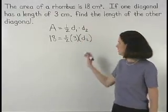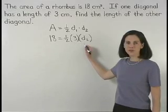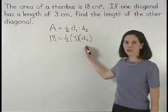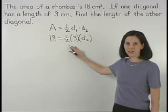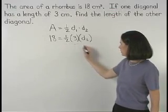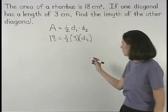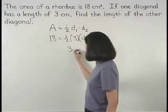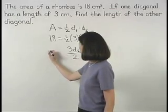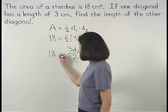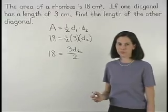Now to find d2, or the other diagonal of the rhombus, we first simplify on the right side of the equation. One half times 3 times d2 can be simplified to 3d2 over 2. So we have 18 equals 3d2 over 2.